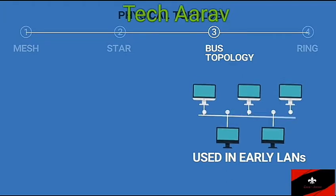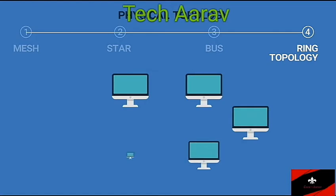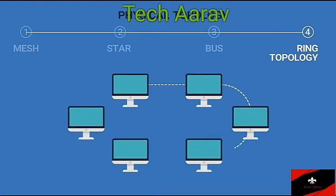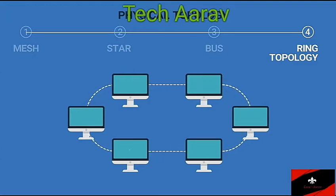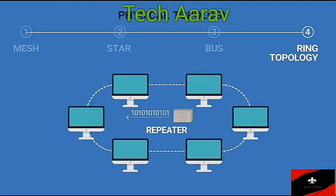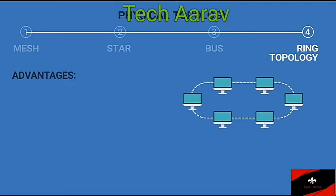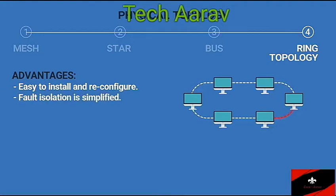Ring topology: In this topology, each device has a dedicated point-to-point connection with only the two immediate neighbors. A signal is passed along the ring in one direction from device to device until it reaches its destination. Each device in the ring contains a repeater. When a device receives a signal intended for another device, its repeater regenerates the bits and passes them along. Advantages: Easy to install and reconfigure. Fault isolation is simplified — an alarm rings whenever a problem occurs, indicating the location.